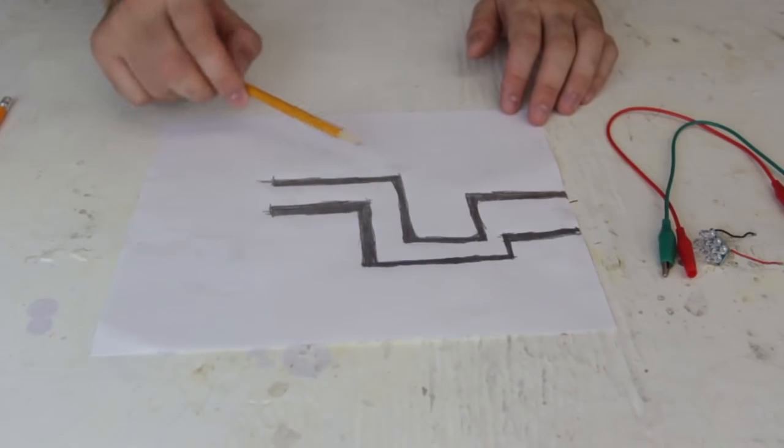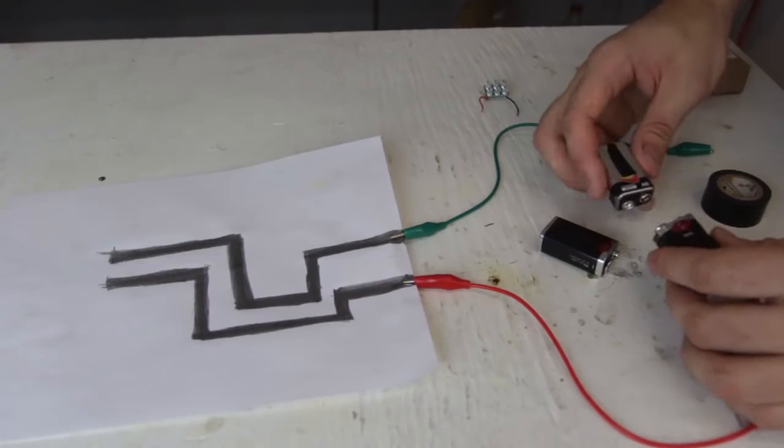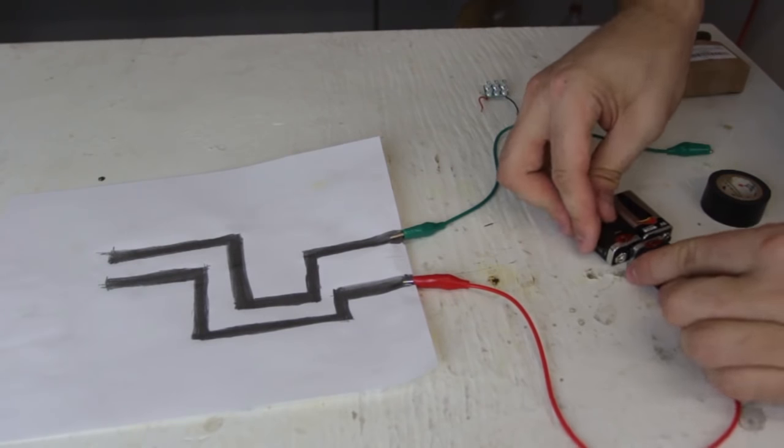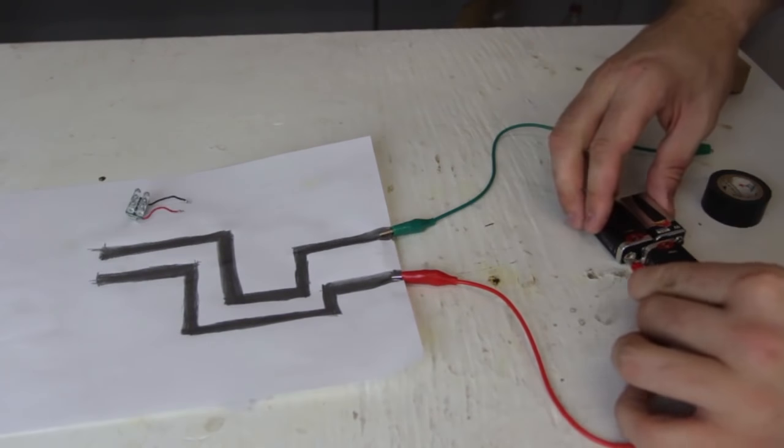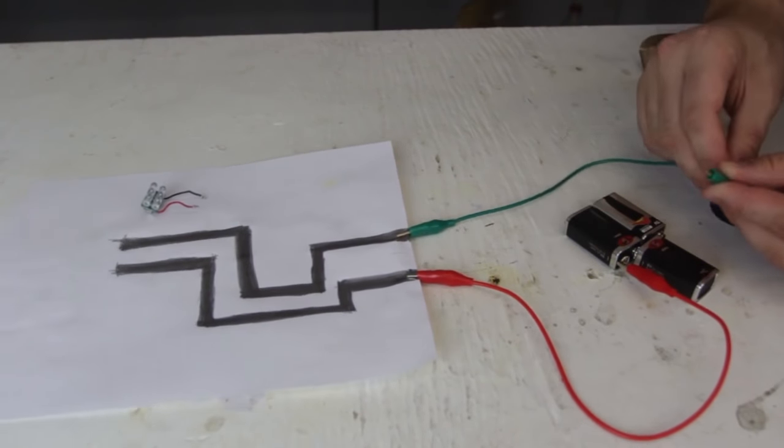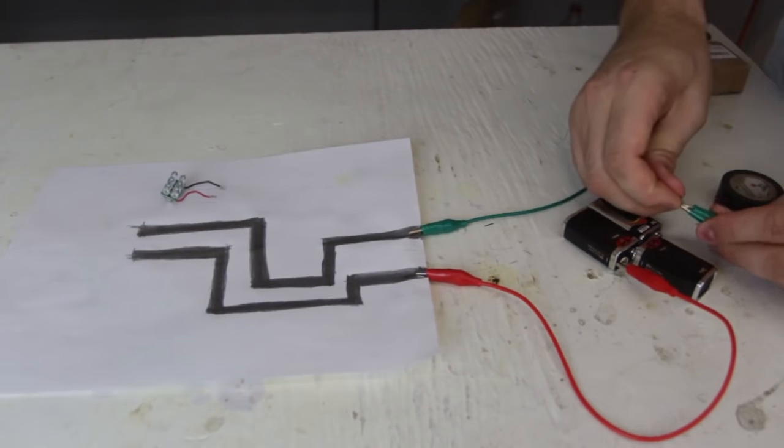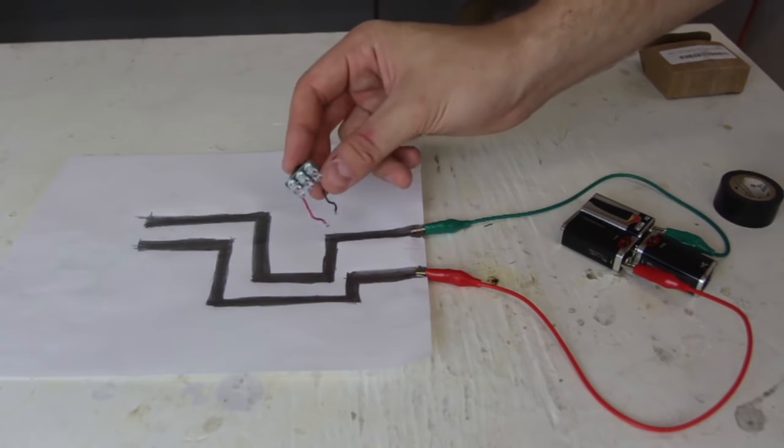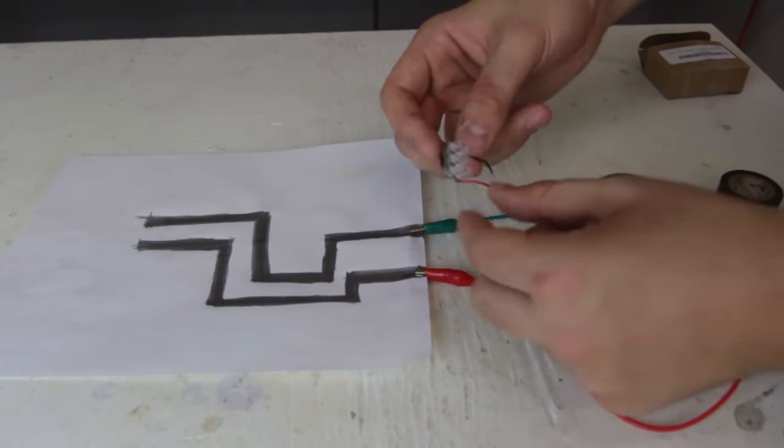We've got ourselves a little circuit like that with the graphite pencil. Now we're going to get three nine-volt batteries and hook them up together just like this. Now I'm going to grab alligator clips and hook one up right here and hook one up right here.